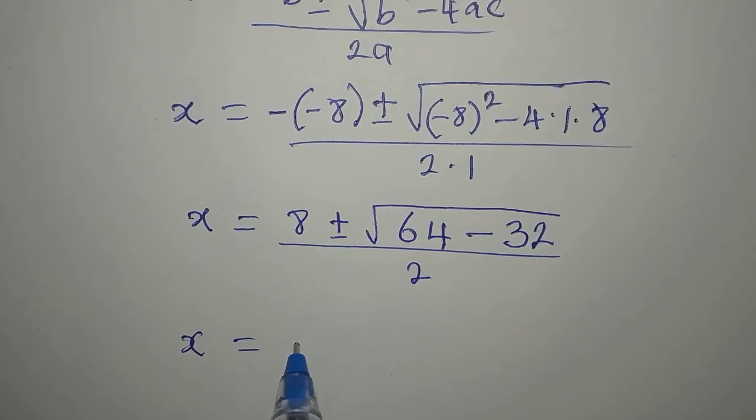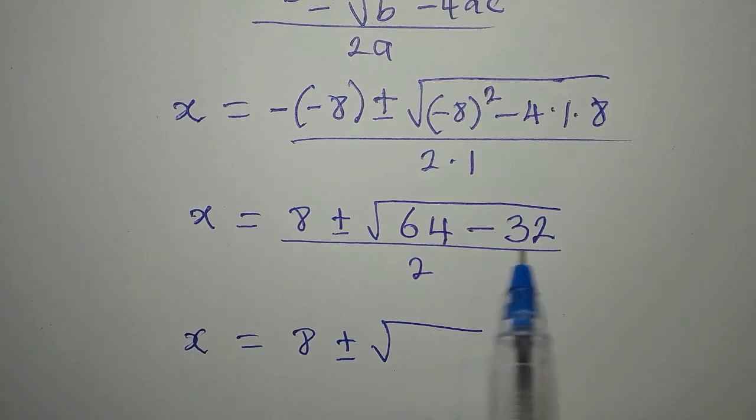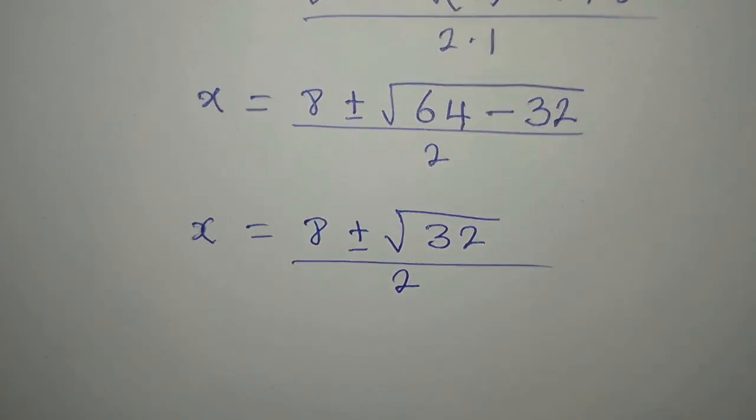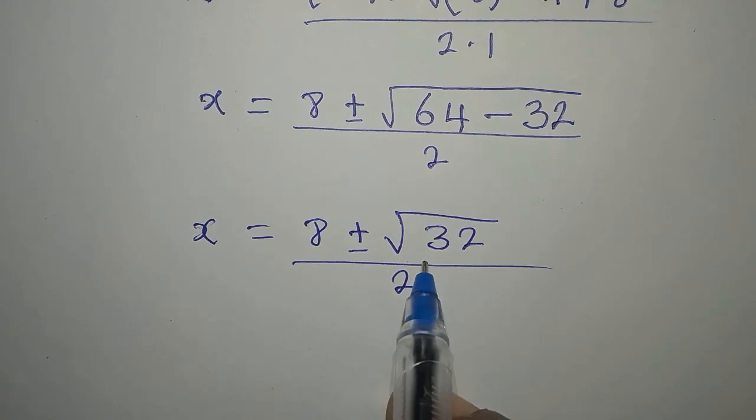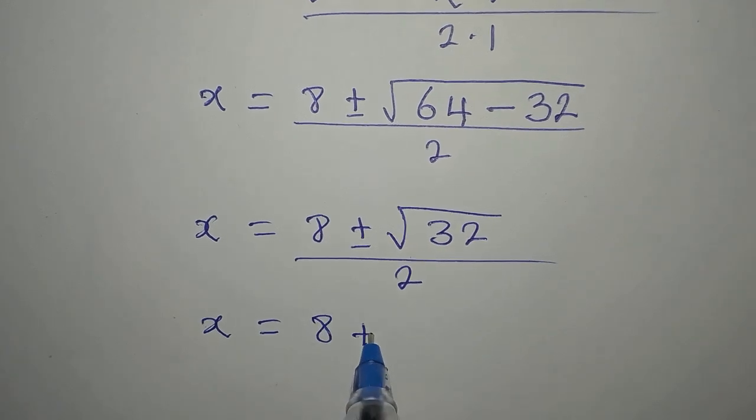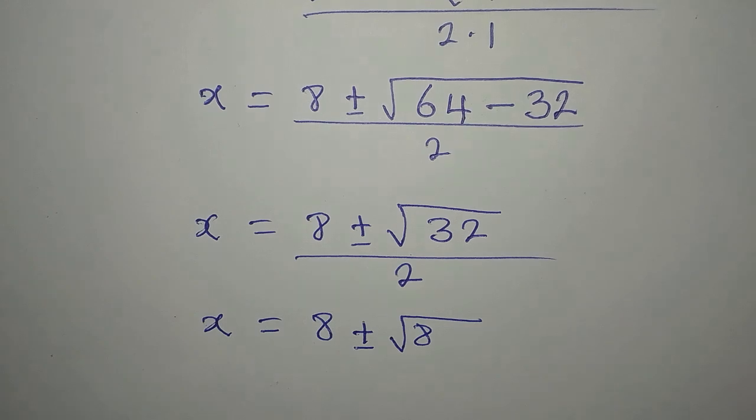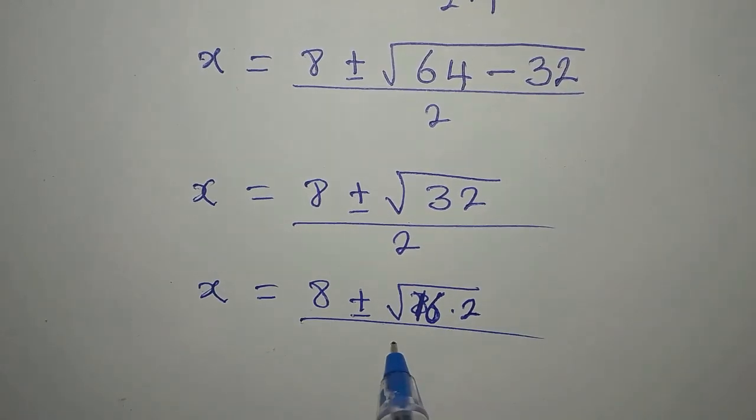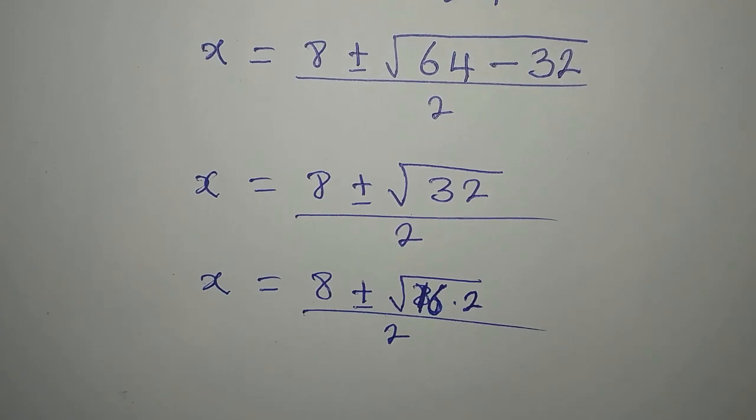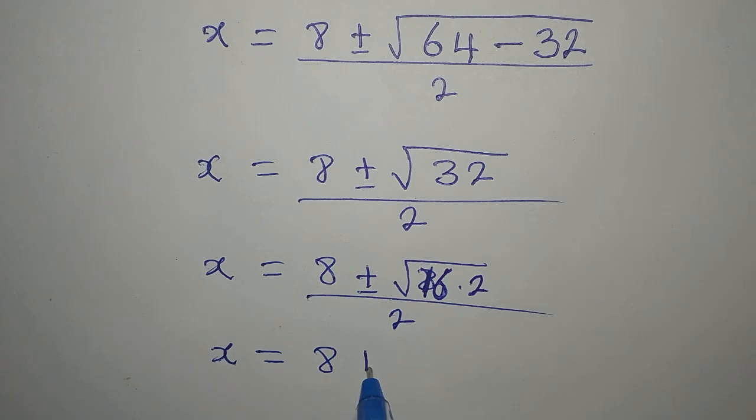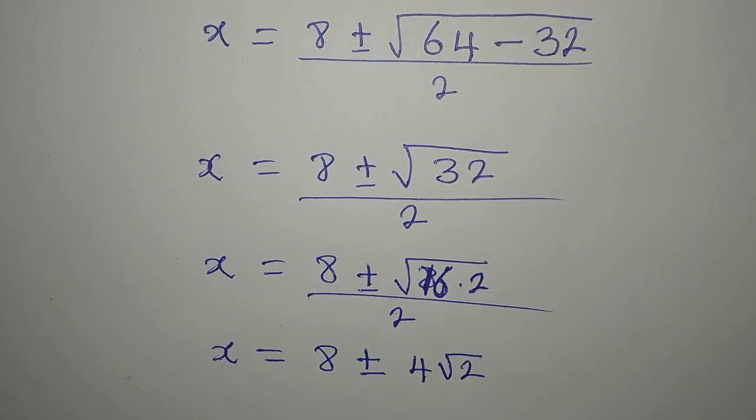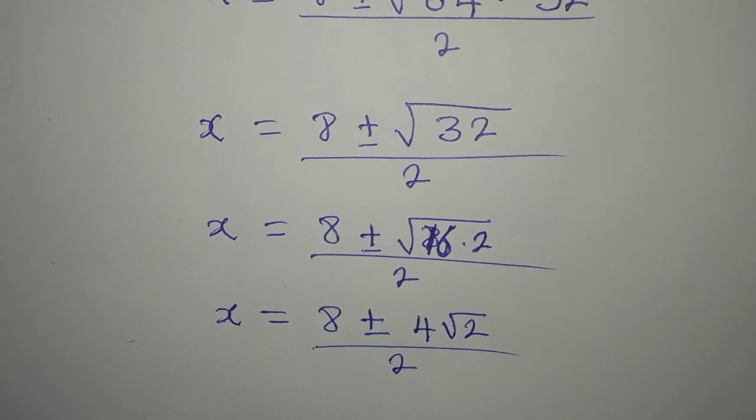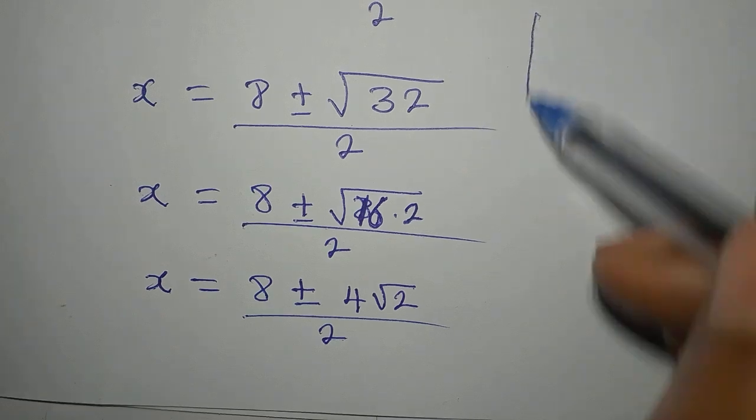This means that our X is equal to 8 plus or minus... 64 minus 32 is 32. So we have this over 2. But mind you that we can simplify this root 32. So X is equal to 8 plus or minus square root of... 32 is 16 times 2. Because 16 is a perfect square. Then we divide this by 2. Meaning that X is now 8 plus or minus 4 root of 2. Square root of 32 is the same thing as 4 root of 2. Then we divide by 2. So let's continue with this.